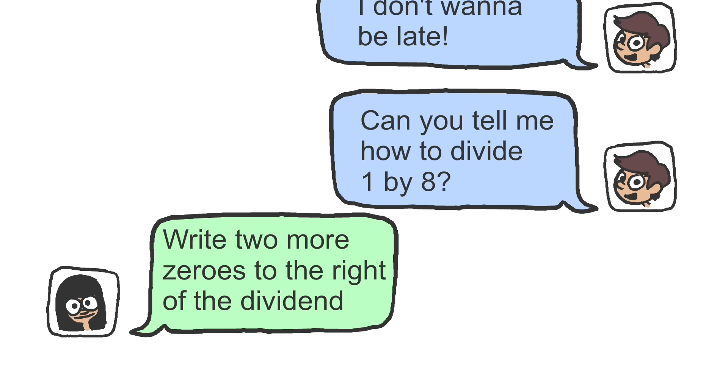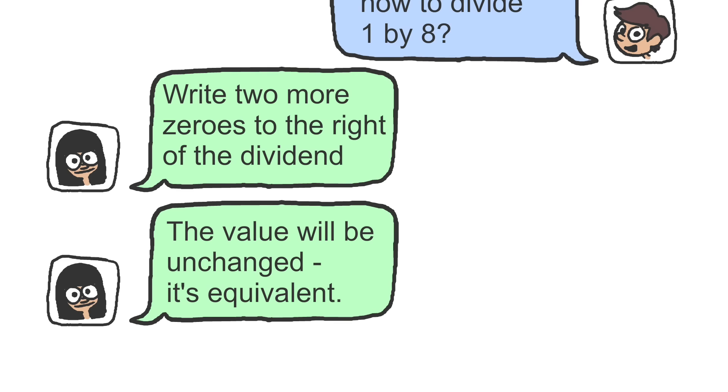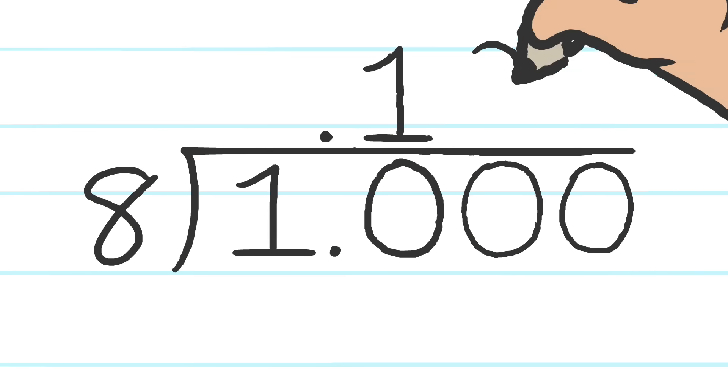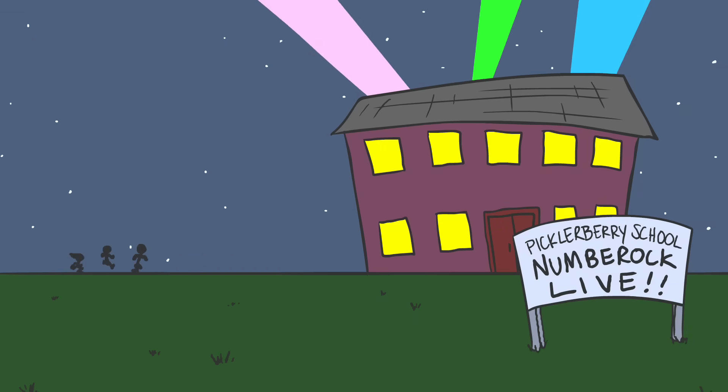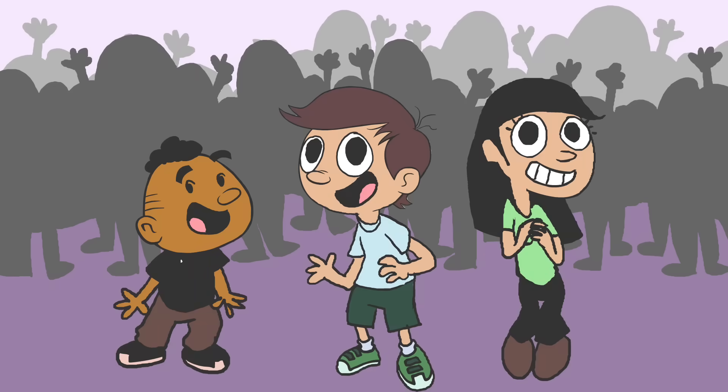She said, write two more zeros to the right of the dividend. The value will be unchanged, it's equivalent. I divided the two numbers and got point one, two, five. We arrived just in time to see number rock live!